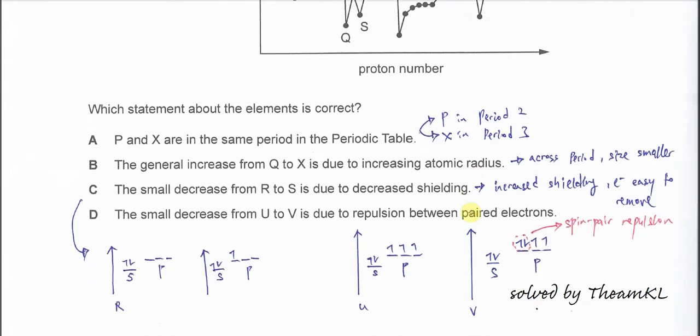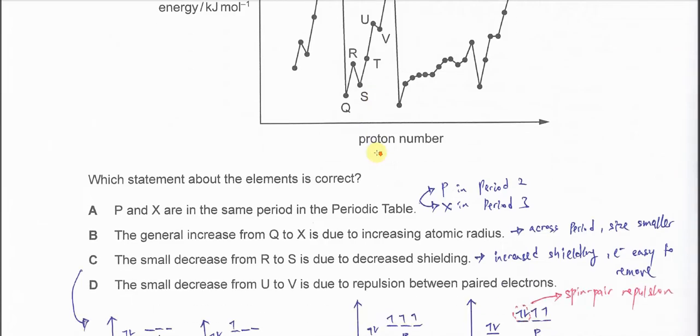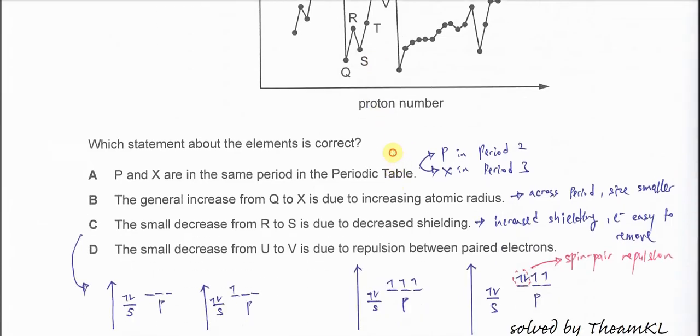Which statement about the elements is correct? A. P and X are in the same period in the table. So P and X, P is in period 2, X is in period 3. Therefore, A is wrong.